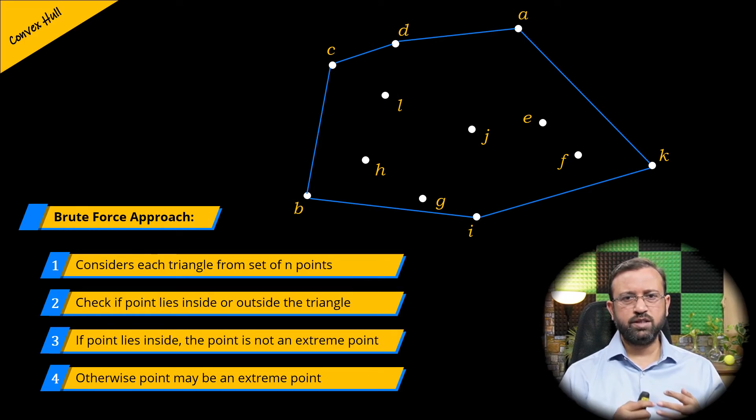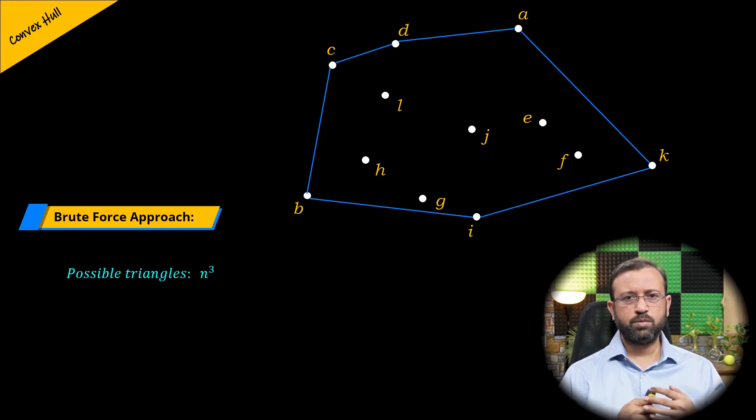By using this approach there will be n cubed possible triangles and since there are n points, so this approach will be taking O of n to the power 4 as the time complexity.